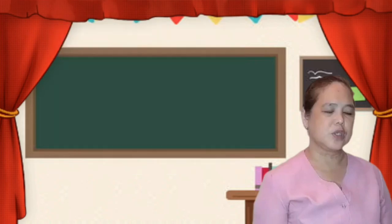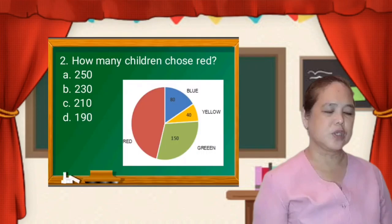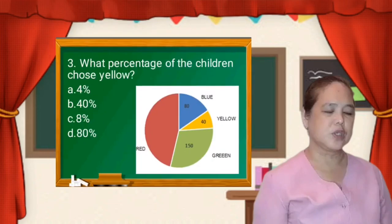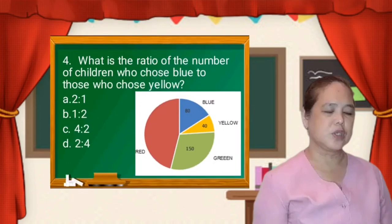Next, you are going to answer number 2, number 3, number 4, and number 5 by yourself by encircling the letter of the correct answer.